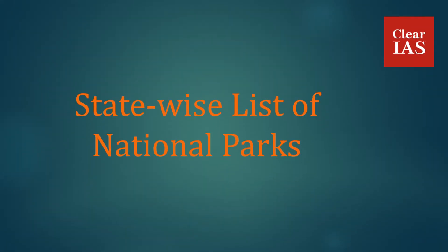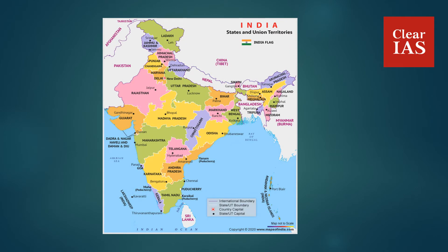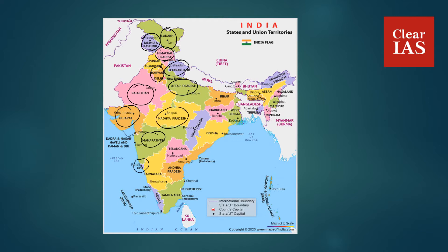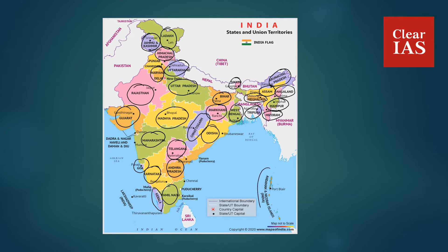Now we will be discussing about all the National Parks state-wise. In India, we have National Parks in almost every state or Union Territory, including Ladakh, Jammu and Kashmir, Himachal Pradesh, Haryana, Uttarakhand, Uttar Pradesh, Rajasthan, Gujarat, Maharashtra, Goa, Madhya Pradesh, Bihar, Jharkhand, Sikkim, Meghalaya, Assam, Arunachal Pradesh, Nagaland, Manipur, Mizoram, Tripura, West Bengal, Odisha, Chhattisgarh, Telangana, Andhra Pradesh, Karnataka, Tamil Nadu, Kerala, and Andaman and Nicobar Islands.